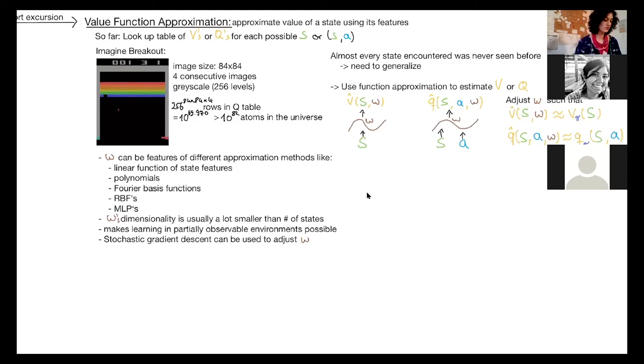And using those, we can then approximate the value function and generalize to new unseen states. And usually the dimensionality of these parameters is a lot smaller than the number of possible states. Additionally, this also makes learning in partially observable environments possible.